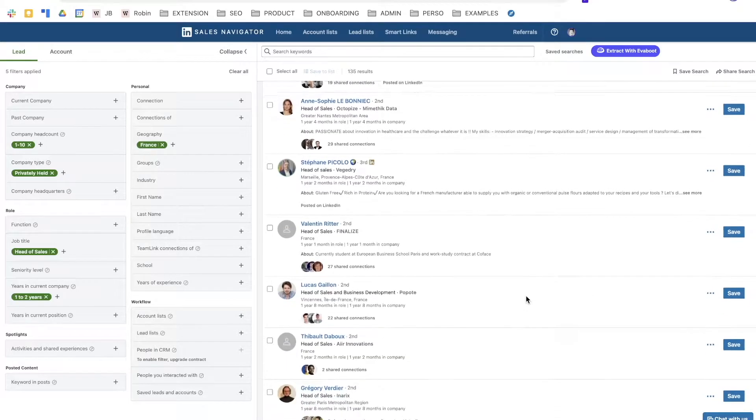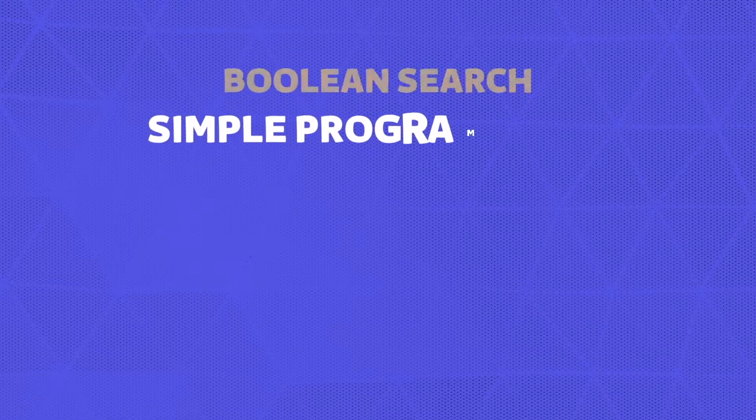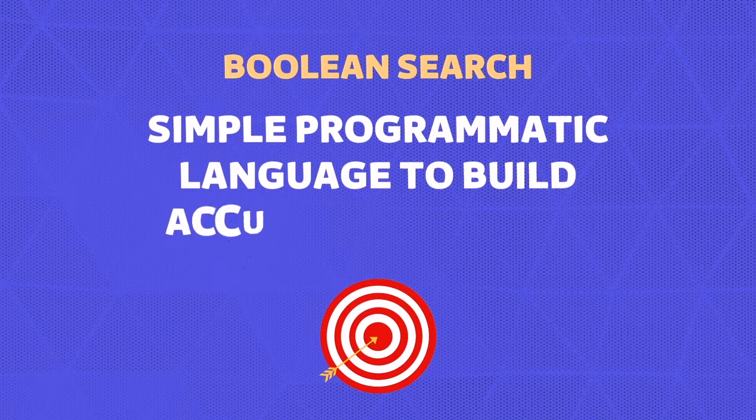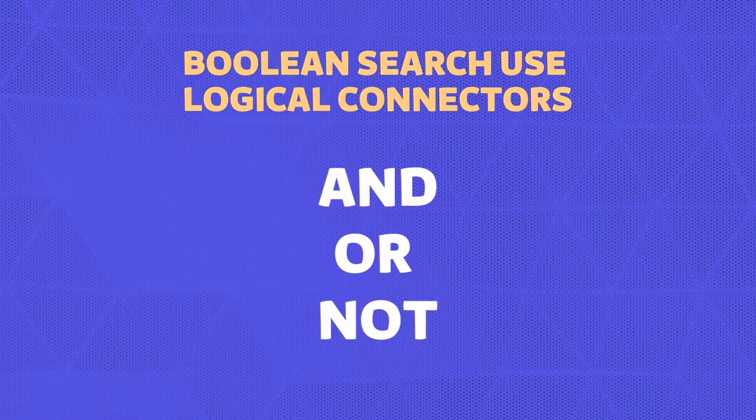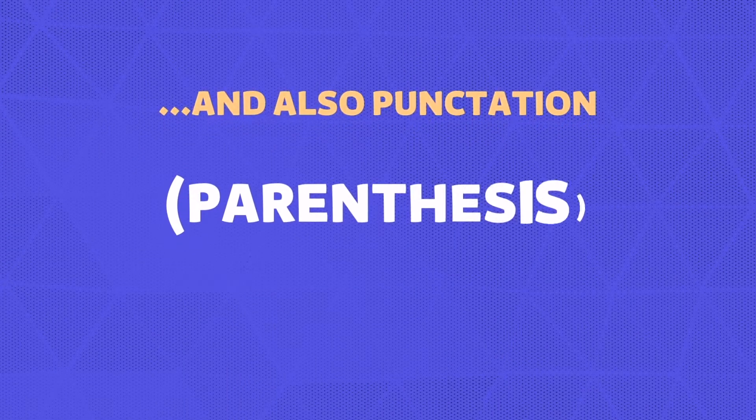Hi guys, in this video I'm going to show you how to use LinkedIn Boolean Search on Sales Navigator to build super accurate lead lists. Boolean Search is a really simple programmatic language that you can use to build super targeted lead lists on Sales Navigator. It uses a combination of logical connectors like AND, OR, and NOT, and also punctuation with parentheses and quotes.